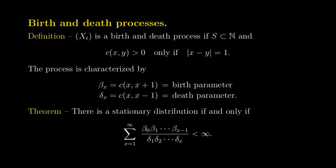You cannot do a jump of length more than one. That means the process, as you see in the slide, is characterized by two collections of parameters that we call birth parameters and death parameters. λ_x is the birth parameter corresponding to the rate at which we go from state x to state x plus 1. δ_x is the death parameter; it corresponds to the rate at which we go from state x to state x minus 1.